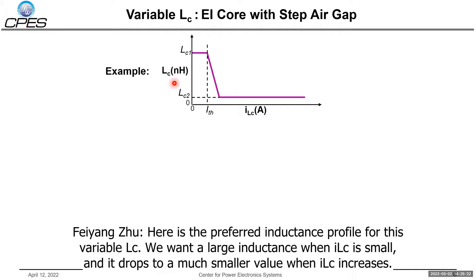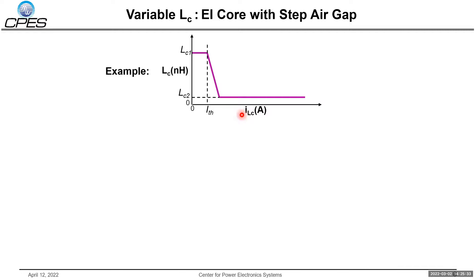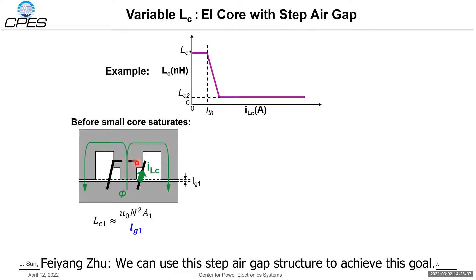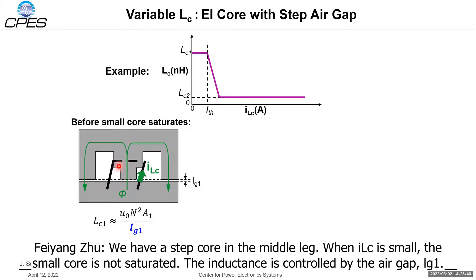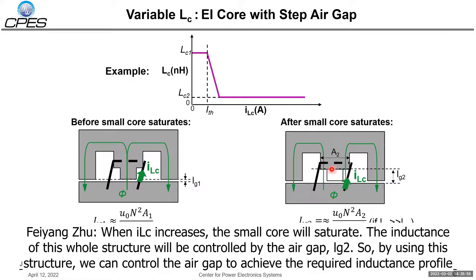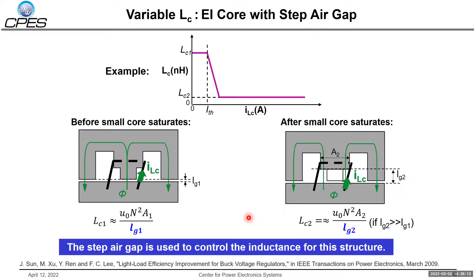Here is our preferred inductance profile for the variable LC: large inductance when LC current is small, dropping to a much smaller value when LC current increases. We use a step gap core structure to achieve this, with a stepped core in the middle leg. When LC current is small, the small core is not saturated and inductance is controlled by air gap Lg1. When LC current increases, the small core saturates first and the inductance is controlled by air gap Lg2. By using this structure, we can control the air gaps to achieve the required inductance profile for the variable LC.